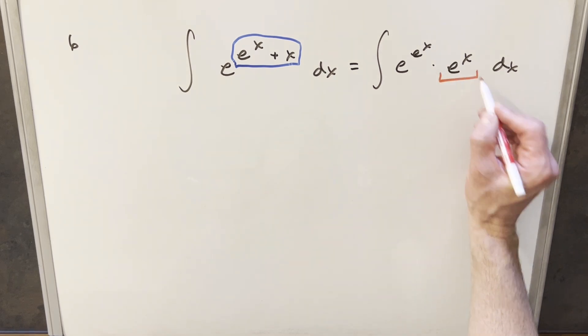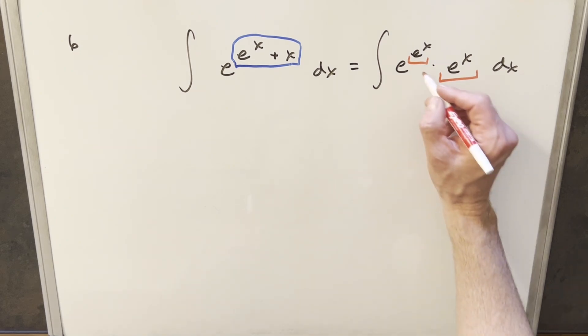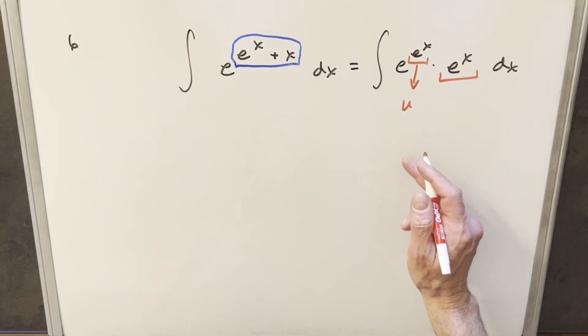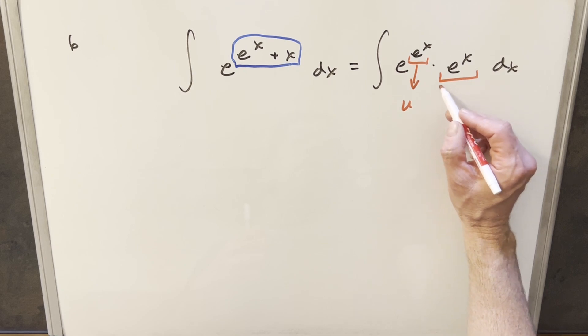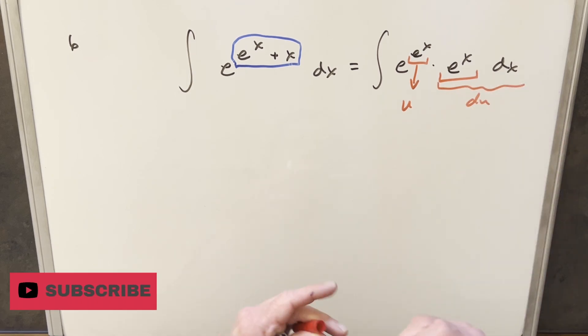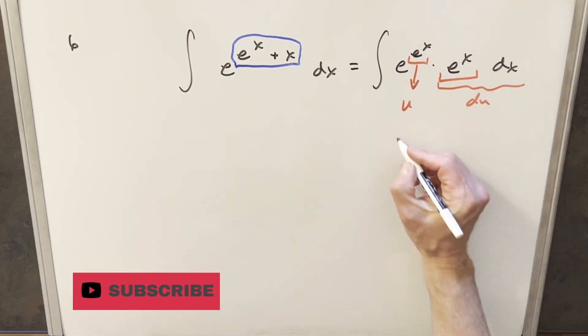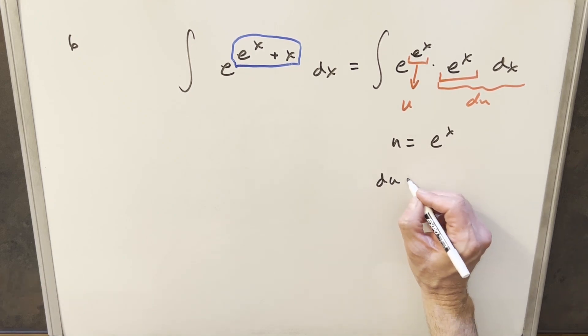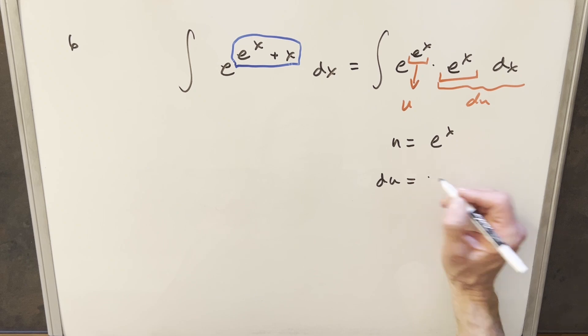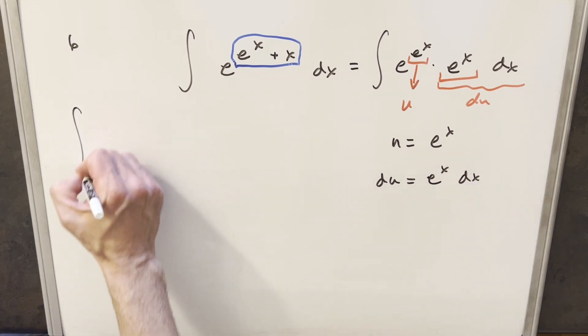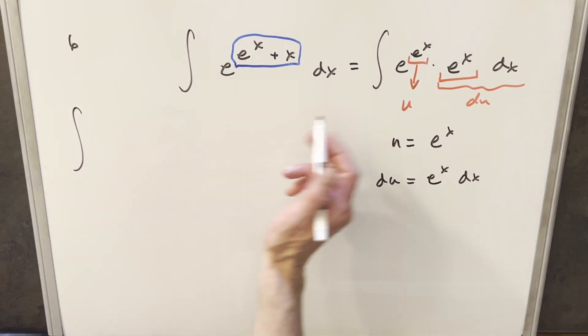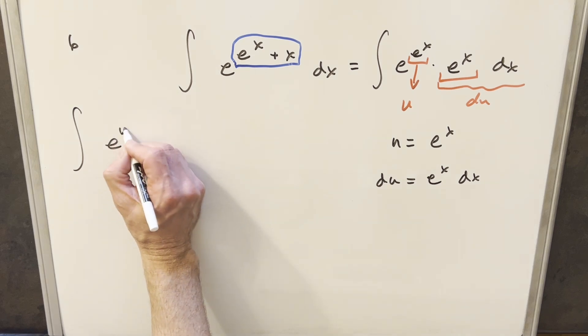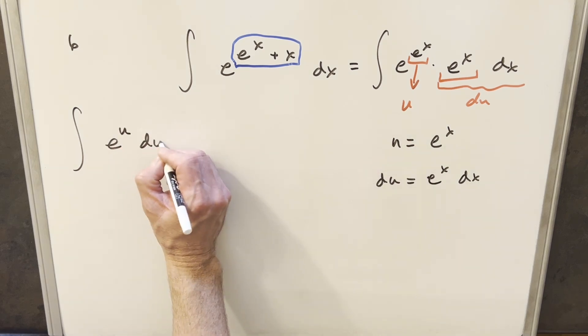Now, we have this e to the x here, we have this e to the x here. So I think if we make u equal to e to the x, then we're going to have our du over here. Let's just see how this is going to work. We'll start with this substitution, take a derivative, and we'll get our du value. The derivative of e to the x is just e to the x dx. There's our du right there. So I'm just going to go ahead with this substitution.